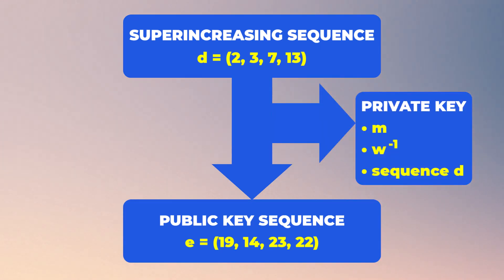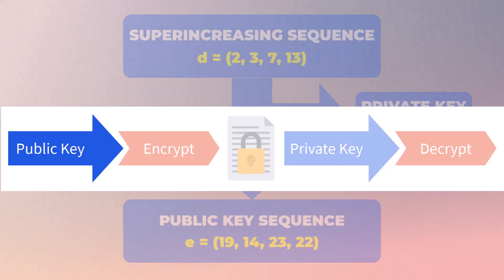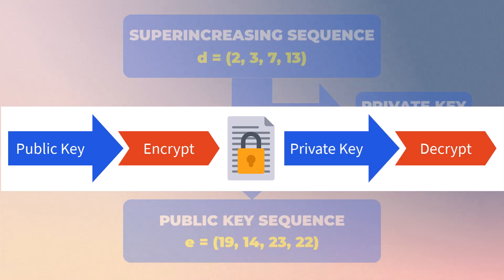During the process, we also produced three components that must be kept secret from the public, known as the private key. These components consist of the integer m, the inverse of w, and our original super-increasing sequence d. As you'll see in this video, the public key can be used by anyone to encrypt messages into ciphertexts, ensuring that only the intended recipient, who possesses the corresponding private key, can decrypt the ciphertext and read the original message.